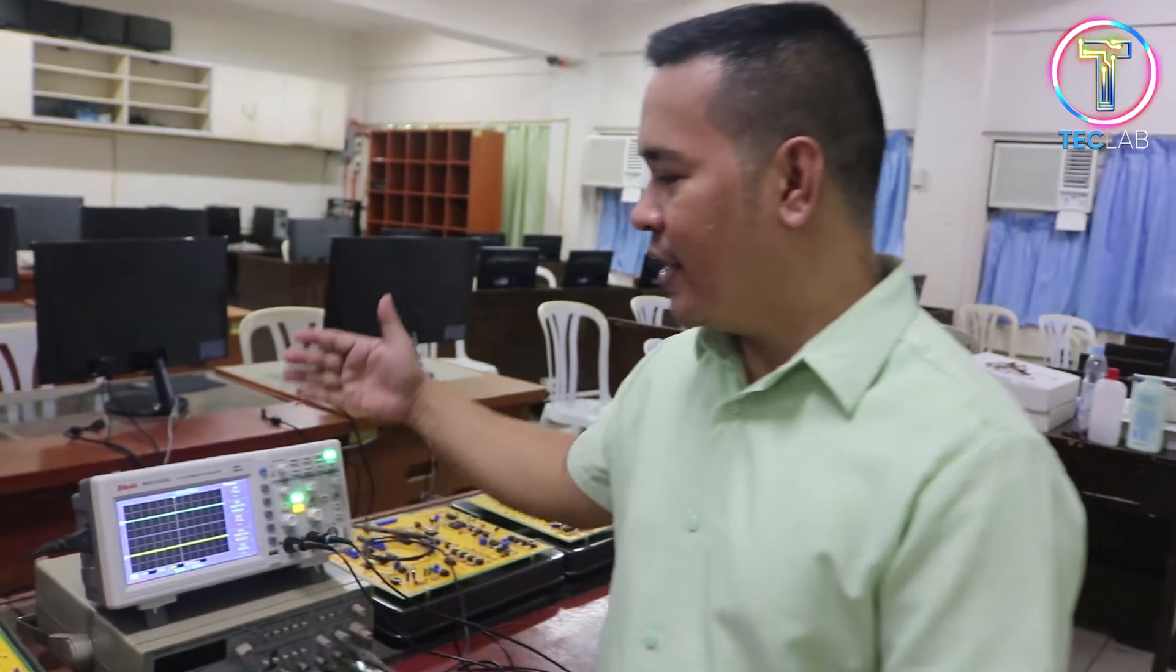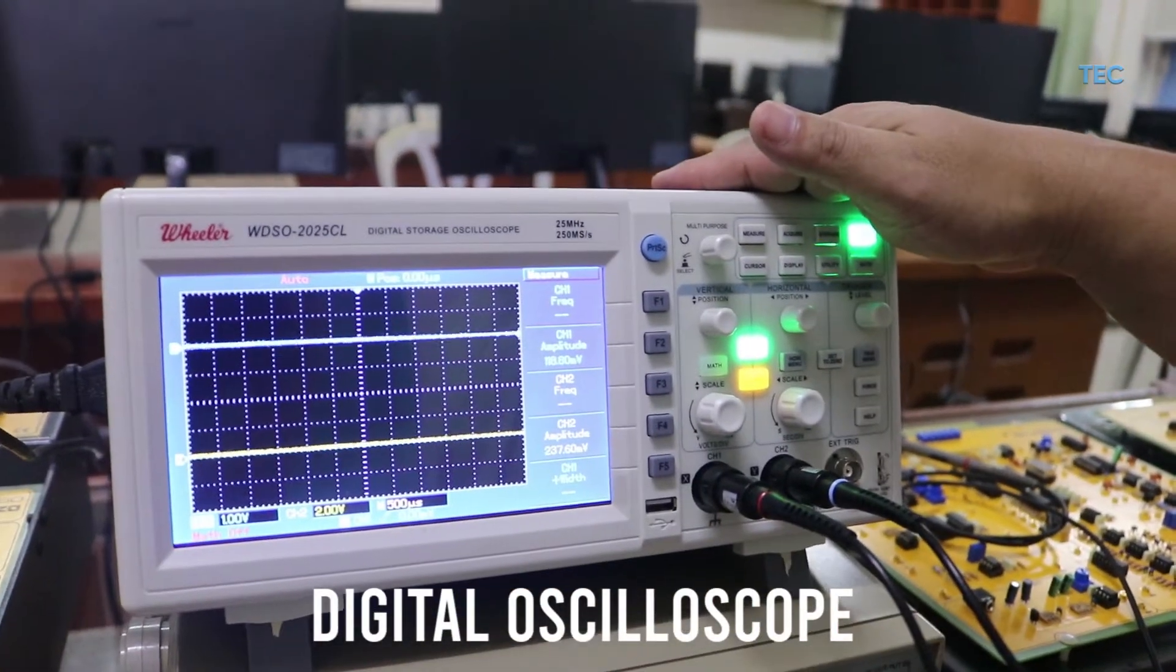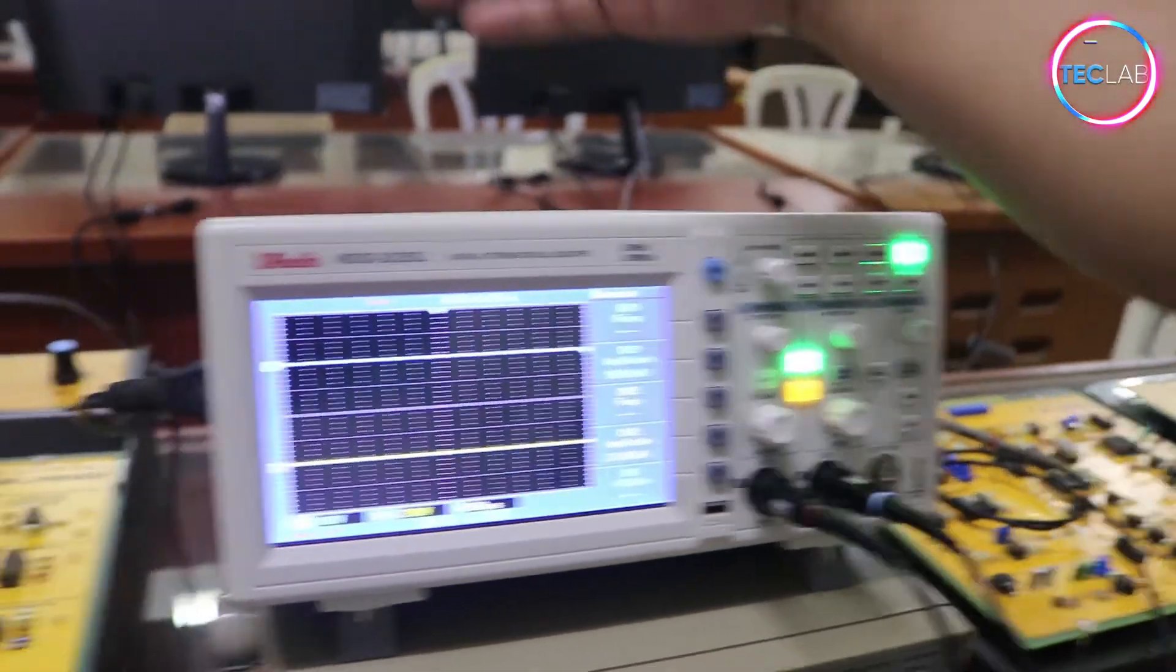To perform this experiment, this is the typical setup. So you need again, a calibrated oscilloscope, and our DeLorenzo module, the analog signal transmission modules.